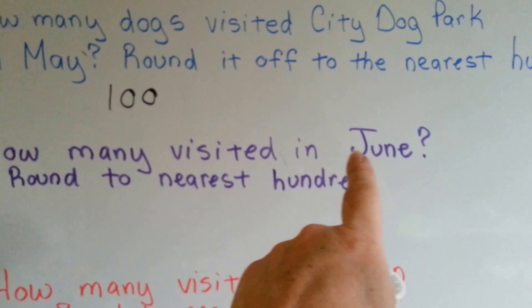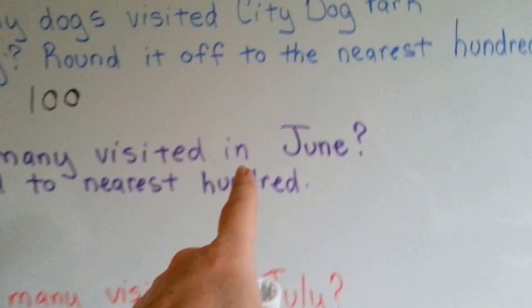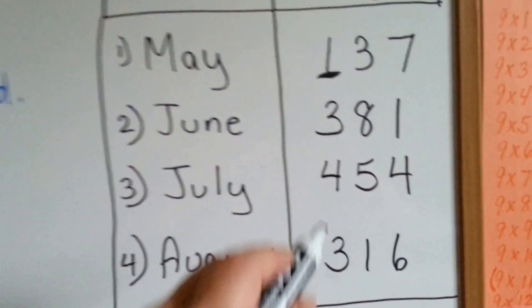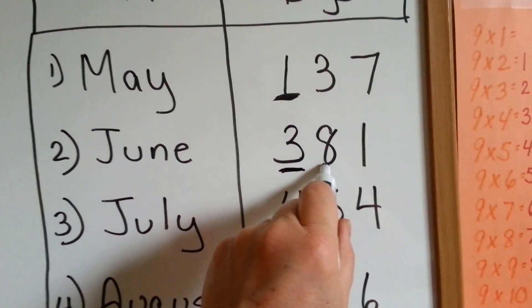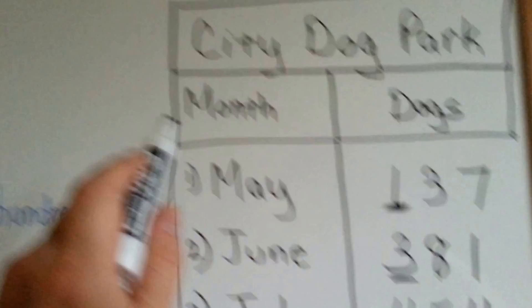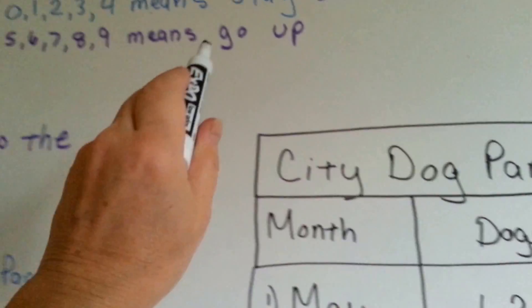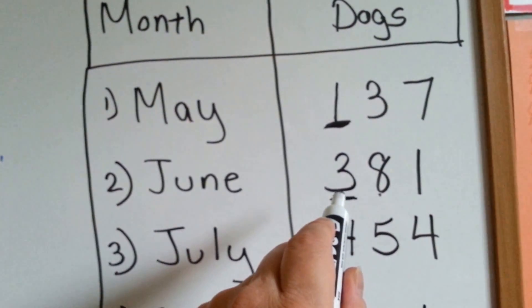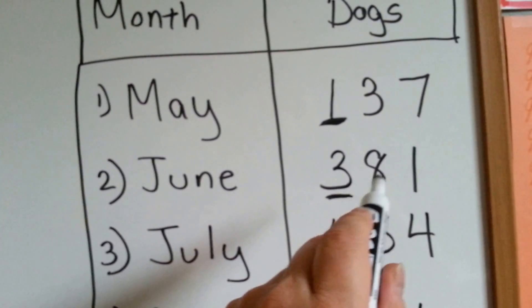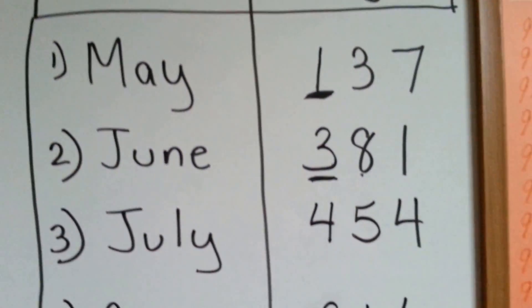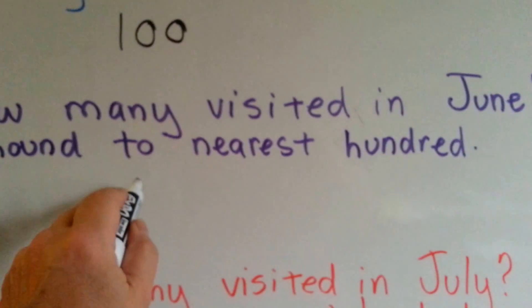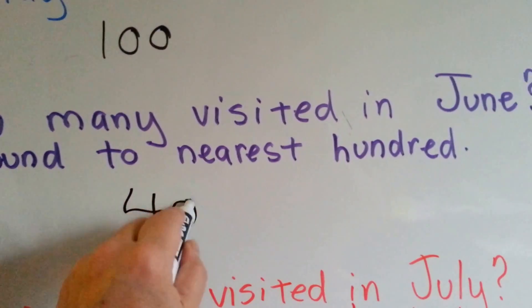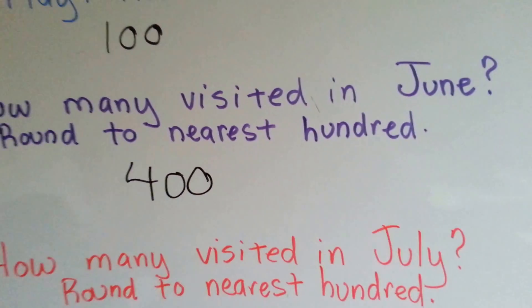How many visited in June? Round that to the nearest hundred. Well, here's June. Here's the hundreds place. The number to its right is the 8, and it's going to tell the 3 what to do. The 8 says to go up to the next biggest number. So it's going to go up to 4, and then these two are going to be finished with their work and turn into zeros. So in June, the number of dogs that visited was approximately 400. That's an estimate.